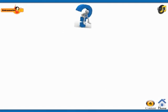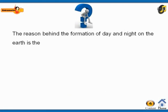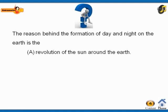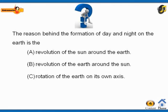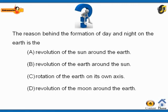Let us try to answer a simple question. The reason behind the formation of day and night on the earth is: A) the revolution of the sun around the earth, B) the revolution of the earth around the sun, C) the rotation of the earth on its own axis, D) the revolution of the moon around the earth. The correct option is C.